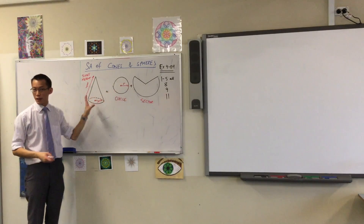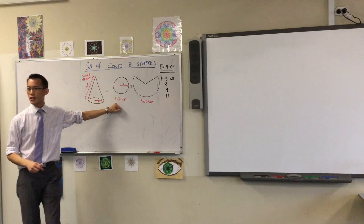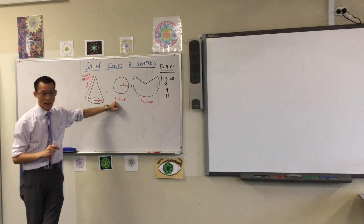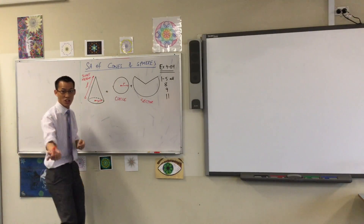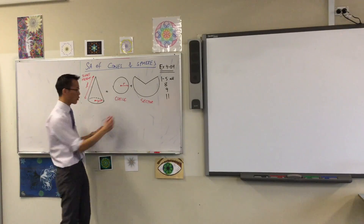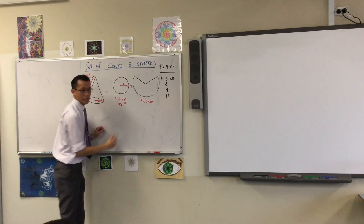Let's start to have a look over at this 2D part. Area of the circle - we know that really well. The area of the circle is just pi r squared.